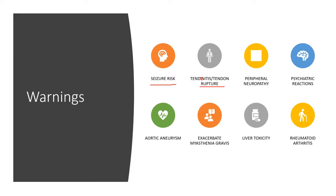Levofloxacin can cause peripheral neuropathy, especially in diabetics. Psychiatric reactions — including hallucinations and other psychotic episodes — can also occur, though these are rare. Aortic aneurysm is a concern related to tendon and blood vessel rupture risk. The medication can exacerbate myasthenia gravis, cause liver toxicity, and caution is advised with rheumatoid arthritis due to the tendon issues.